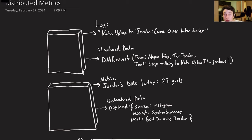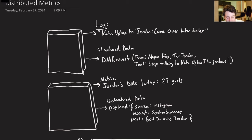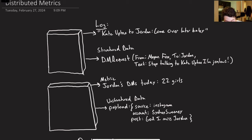First off, we've got a few different types of data that we want to keep track of. We've just got logs from our servers — here's an example of one: a text message from one user to another. That happens sometimes.